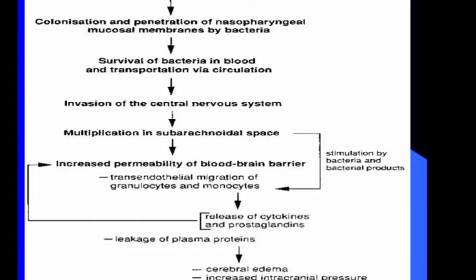In meningitis, bacteria spread through the blood-brain barrier. After trans-endothelial migration of granulocytes and monocytes, there is release of cytokines and prostaglandins. Prostaglandin activity is increased by the cyclooxygenase enzyme. This leads to leakage of plasma proteins, development of cerebral edema, increased intracranial pressure, and impaired circulation. The release of cytokines and prostaglandins induces the inflammatory process and they are the main mediators of inflammation.